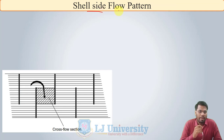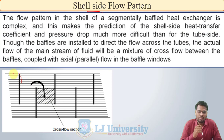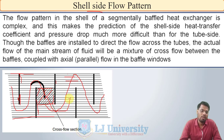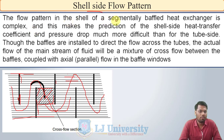This is the shell side flow pattern. In a shell and tube heat exchanger, the shell contains baffles and tubes. When the flow path of the fluid passes between two baffles, at the tip of the baffle, the flow is cross flow — the fluid flows over the surface of the tube in a cross flow pattern. When fluid is passing through the baffle window area, the flow is counter or parallel to the fluid flowing inside the tubes. The flow pattern in the shell of a segmentally baffled heat exchanger is complex, making prediction of the shell side heat transfer coefficient and pressure drop much more difficult than for the tube side.